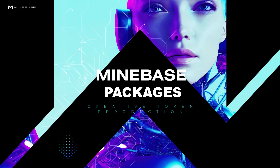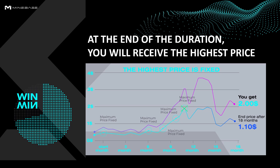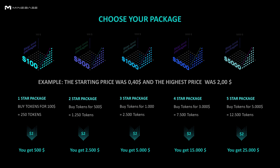Let's go to the Minebase packages. As shown on the chart, no matter if the token rises or falls you get more value. If the token falls you get more tokens, and if the token rises you get more value. Each package has a duration of 18 months. During this period the maximum price is fixed. For example, if you buy for $0.40, within the 18 months the maximum price — no matter what the price is at the end of the term — is fixed, and you can create a huge added value with this package.